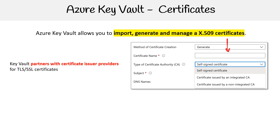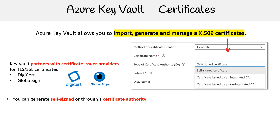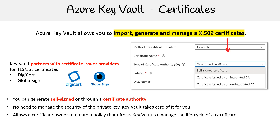Key Vault partners with certificate issuers for TLS and SSL certificates. We have DigiCert and GlobalSign — those being two very large companies. You can generate self-signed or through a certificate authority, and there's no need to manage the security of the private key; Key Vault takes care of it for you.